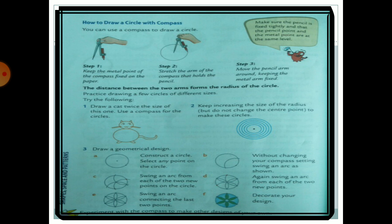Practice drawing a few circles of different sizes. Here you need to make a cat — first draw a big circle, then a smaller circle, and then add its legs, eyes, and nose using circles.